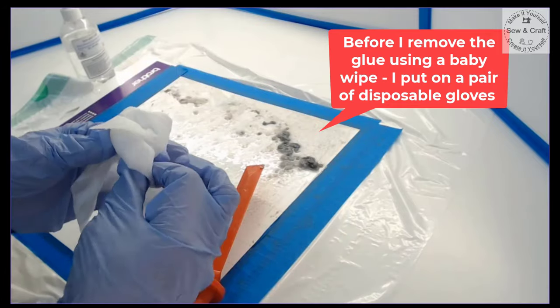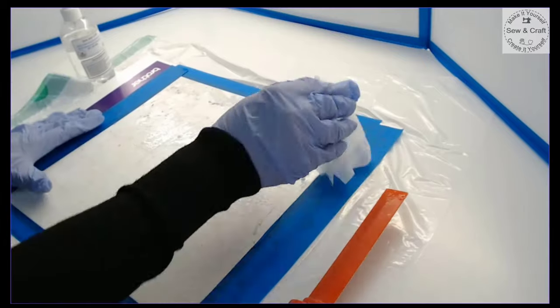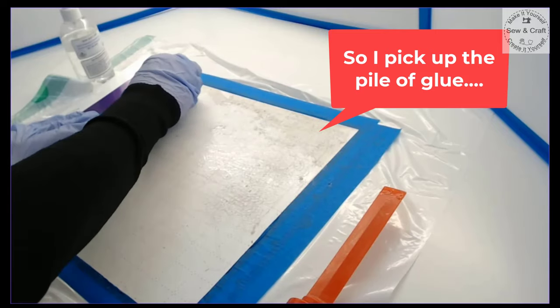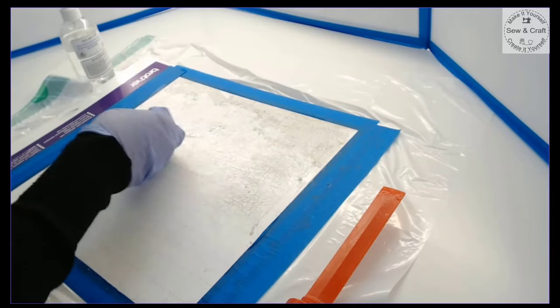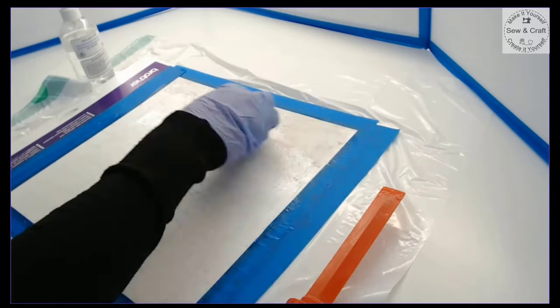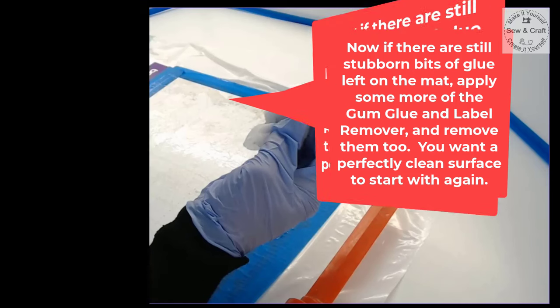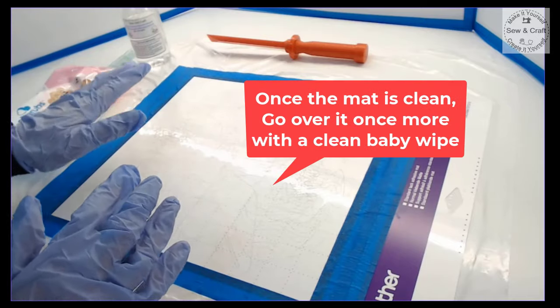Before I move that pile of glue off of the mat using a baby wipe, I put on a pair of disposable gloves only because I don't like the icky feeling. So I pick up the pile of glue and then once I've picked up that pile of glue I'm just going to give the mat a good wipe all over. If there are still stubborn bits of glue like they are at the top of this mat just apply some more of the gum glue and label remover and remove that part too because you want a perfectly clean surface to start off with again.